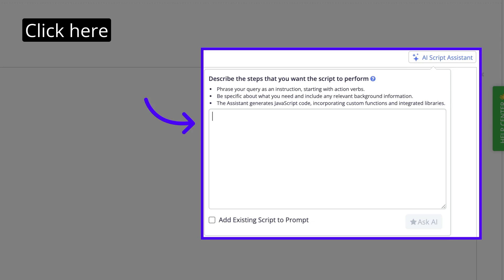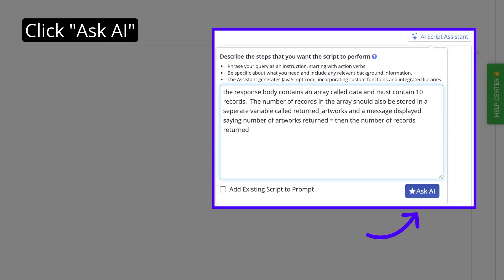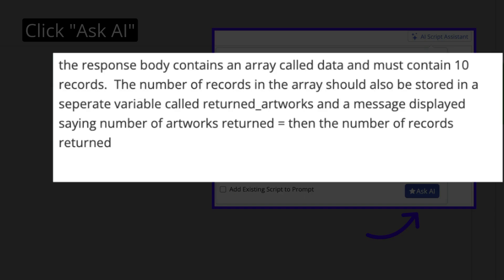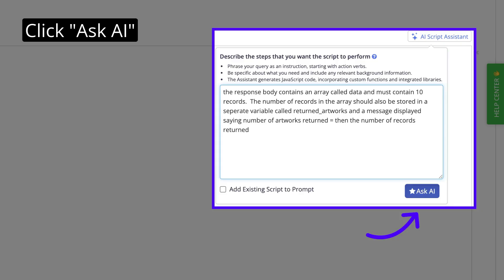The killer feature is this AI script assistant prompt allows you to use natural language to define the requirements for the script to process the API response. So let's type the following: 'The response body contains an array called data and must contain 10 records. The number of records in the array should also be stored in a separate variable called returned artworks, and a message displayed saying number of artworks returned equals the number of records returned.'